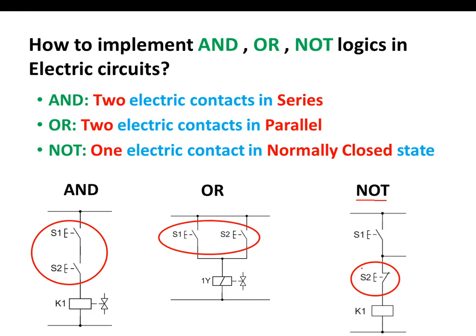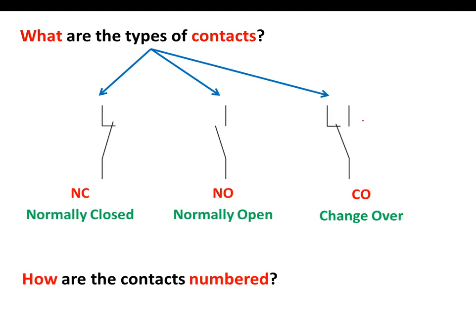What are the types of contacts? We have three types: normally closed, normally open, and a changeover which combines both. So we have two in one — normally closed plus normally open. These contacts must have numbers, and these numbers are fixed: 1-2 for normally closed, 3-4 for normally open, and 1-2-4 for the changeover contact.